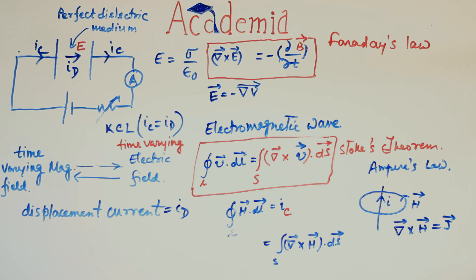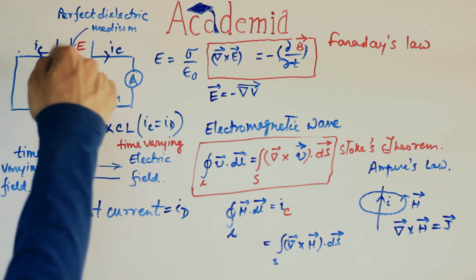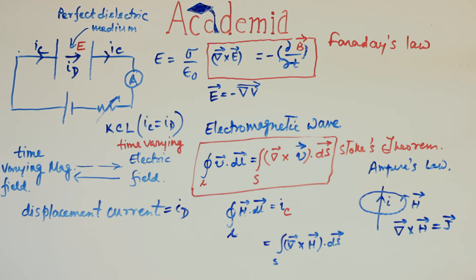Ampere said closed line integration of H dot dL is equal to IC. But if this is just conduction current, what happens inside the capacitance in the free space where magnetic field has also been experimentally proved to exist? To account for that, Maxwell introduced the fictitious current called displacement current ID. So, closed integration of H dot dL is basically IC plus ID.